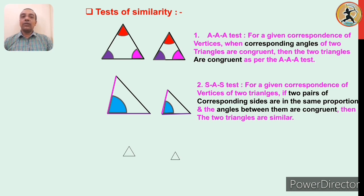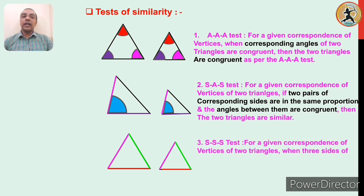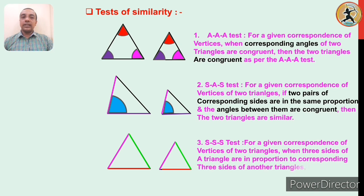Now, the last test: we consider all three sides. All three sides of the first triangle are in proportion with the corresponding three sides of the second triangle. Then those two triangles will be similar to each other as per the SSS test. So here we have learned three tests of similarity.